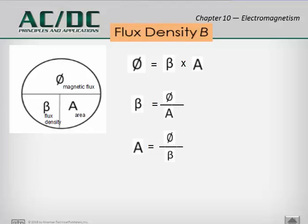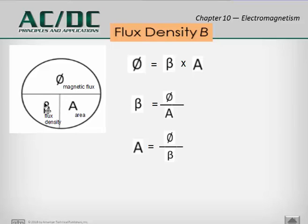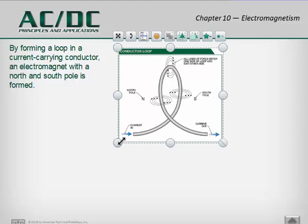In some calculations it may be necessary to rearrange this formula. We can use the circle with three letters, as we did with Ohm's law — any three-variable algebraic equation can be put in a circle, and as long as you have two of the three you can find the third. The original formula is B equals phi over A. If we're looking for phi, then phi equals B times A. If we're looking for area, it equals phi divided by B. Just cover up whatever you're looking for to find the remaining variable.